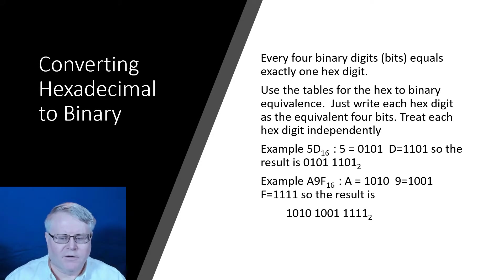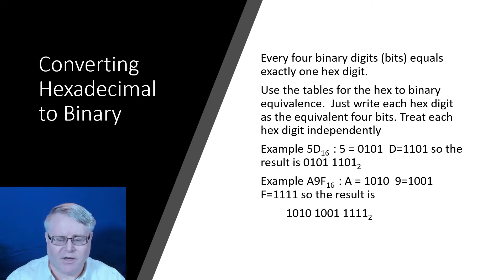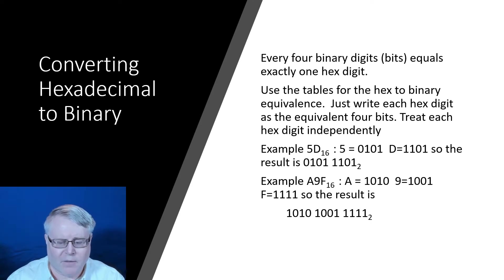To go the other direction — hex to binary — you simply substitute four binary digits for each hex digit. Just look it up and you're done. So 5D becomes: look up 5 → 0101, D → 1101. For A9F, there are three hex digits so the binary string will be of length 12 — four bits for each place. Just look up A, 9, and F and you have your answer.